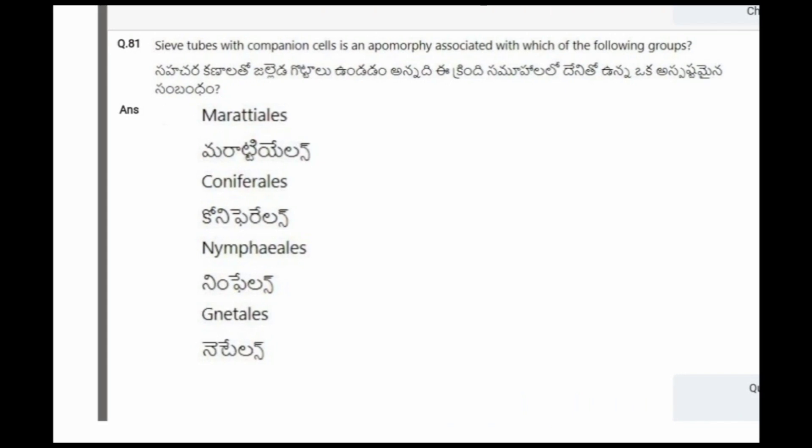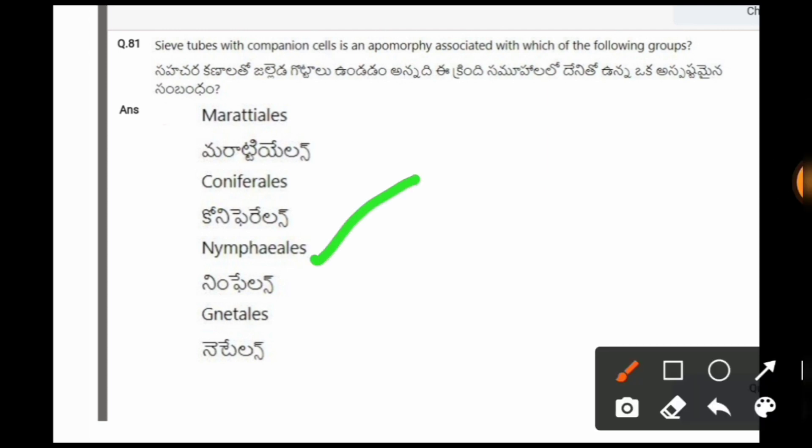Next question: Sieve tubes with companion cells is an apomorphic character associated with which of the following groups? The options are Marchantiales, Coniferales, Nymphaeales, Neetales. The correct option is the third one, Nymphaeales.